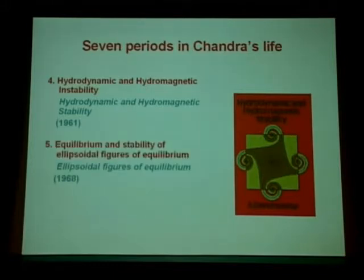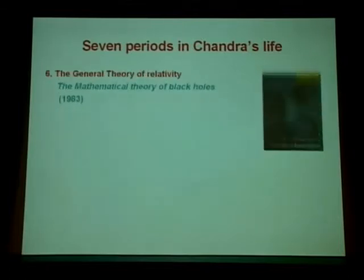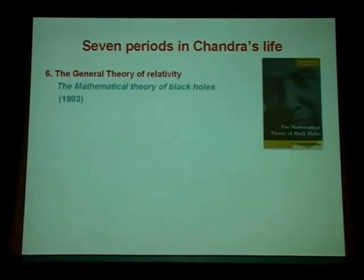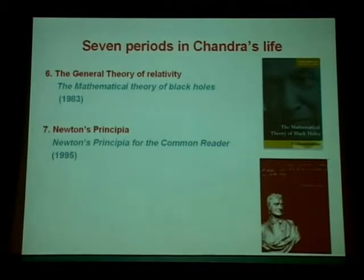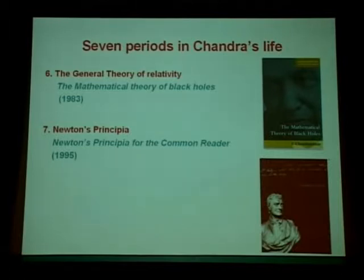Then the equilibrium and stability of ellipsoidal figures of equilibrium — this is 1968. Then a long period was spent on different aspects of the general theory of relativity, and out came this monograph, a very big book on the mathematical theory of black holes. And in his final period, he was fascinated by Newton's Principia, and he wrote this book: Newton's Principia for the Common Reader.